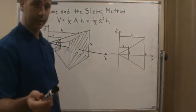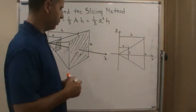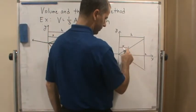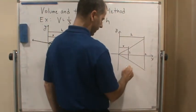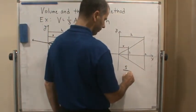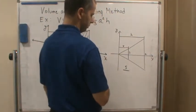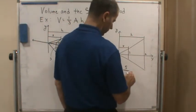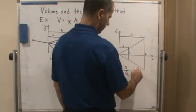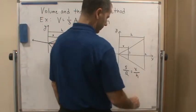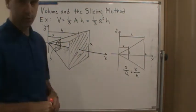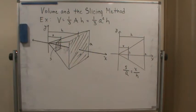And so since they're similar triangles, we can make a proportion of the sides. So we know that this side is proportional to this length. So this side is proportional to this one. So s over a is equal to x over h. And so that's how we get proportional sides. So all we're doing is using the fact that these are similar triangles.